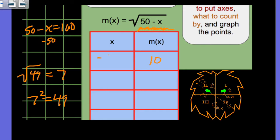So when X is negative 50, the answer to the question is 10. 50 minus negative 50 is 100. The square root of 100, or what number times itself equals 100, is 10.